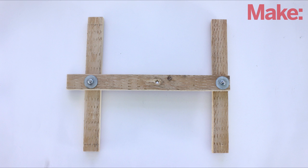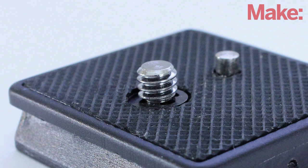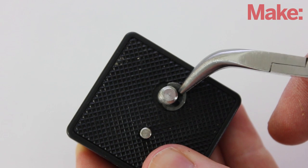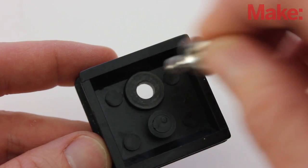To attach the frame to the tripod, we're going to use the tripod's quick release plate. We just need to replace the attaching screw with a longer bolt. Start by removing the snap ring that's holding the screw in place. Then, remove the screw.